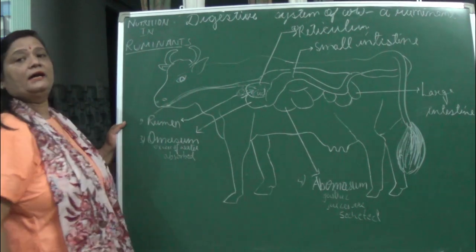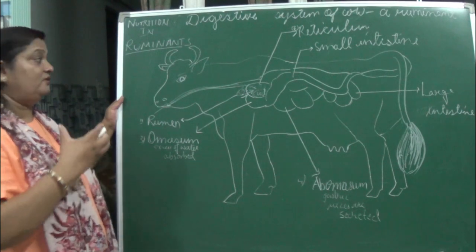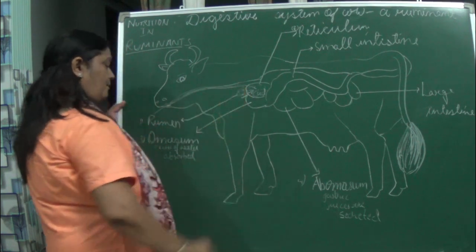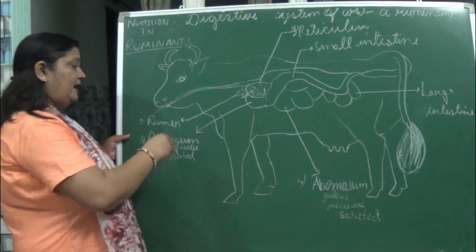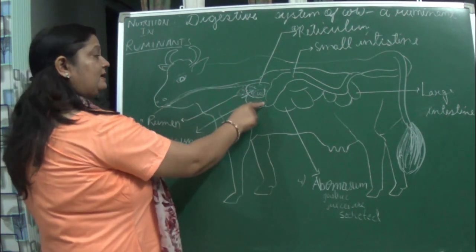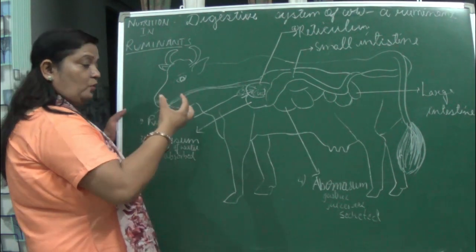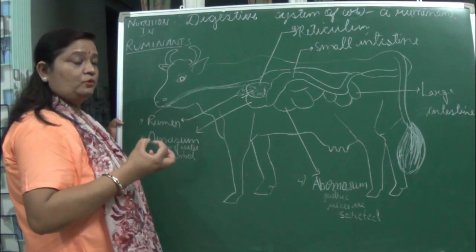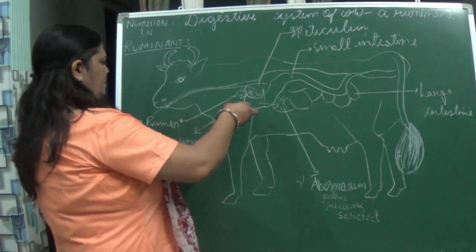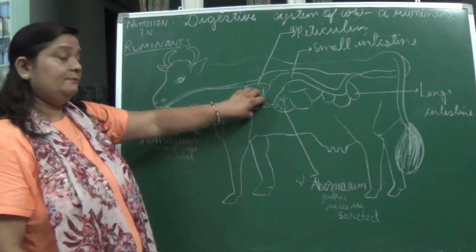After forming the cud, this is again passed back to the mouth, where they chew this partially digested food again. Then it is passed down again to the chambers of the stomach. In the omasum — the third region — digestion takes place again, and the excess water present in the digested food is absorbed.